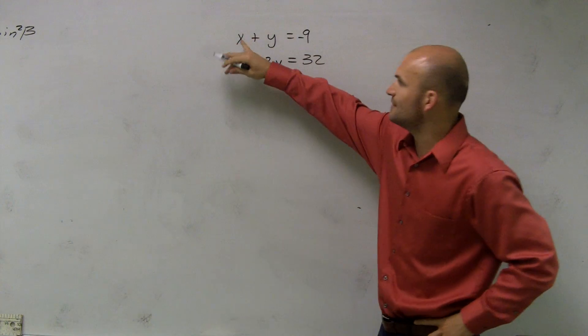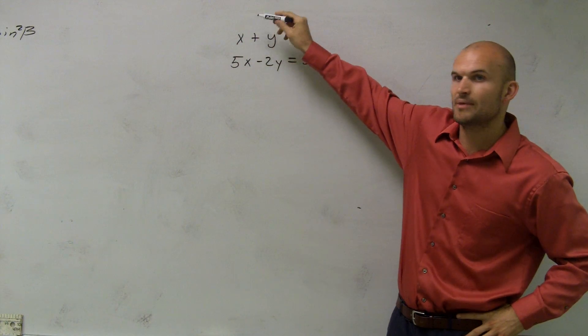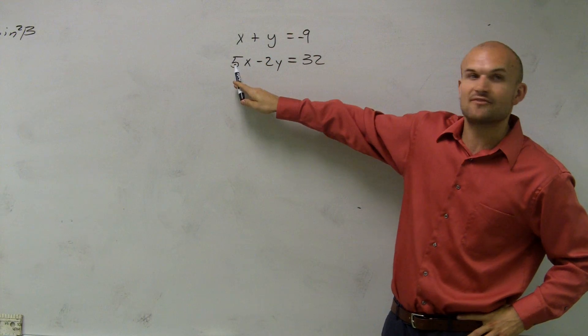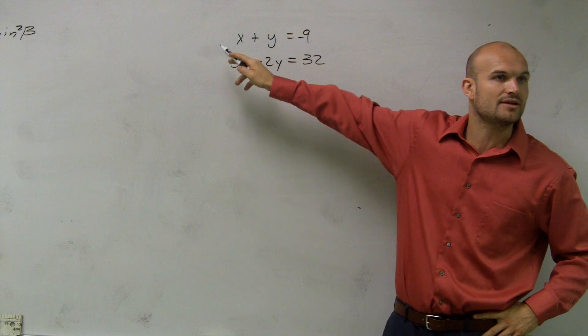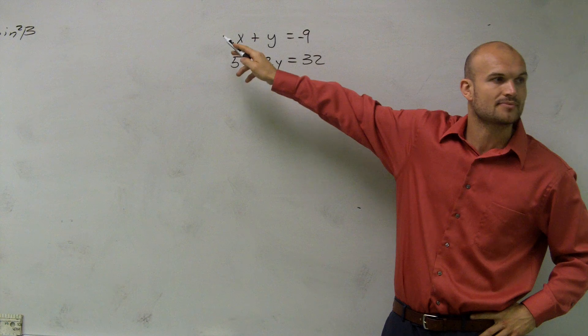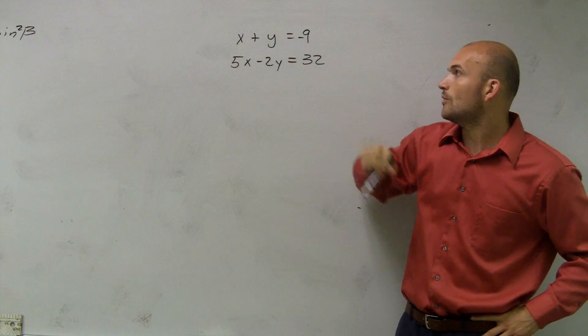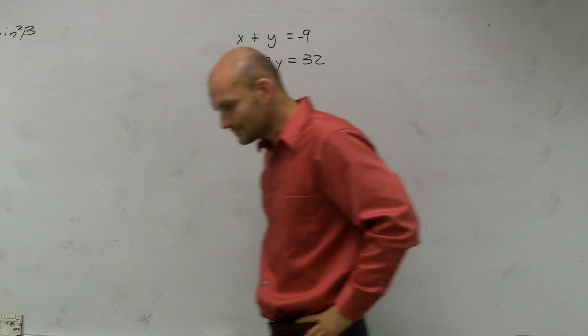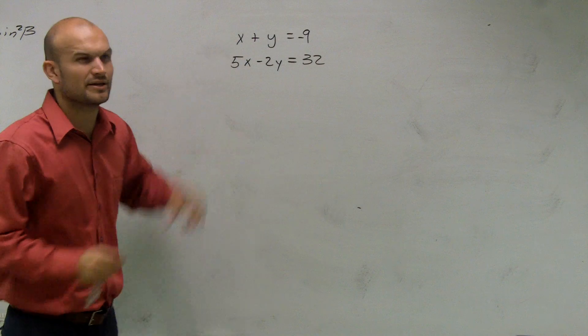So what number, if I wanted to eliminate the x's by using subtraction, if I have five in front of this one, what would I have to get in front of this x for it to get the same? Five. So how can I get a five in front of this?